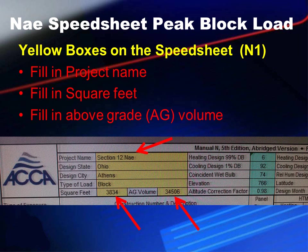We're going to start filling out the Manual N form now. The N1 form is at the top of the page. You pick the project name — Section 12NAE in this case — basing the form on Section 12's block load done in Athens, Ohio. We have a square footage of 3,834 and 9-foot ceilings, so 9 times 3,834 comes out to 34,506 cubic feet. We're entering the above-grade volume, square footage, and the project name.